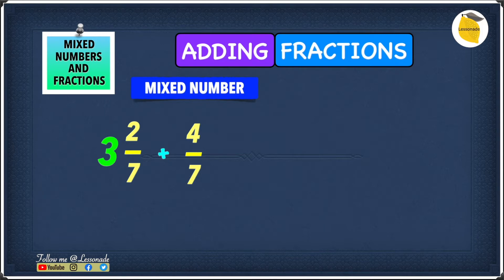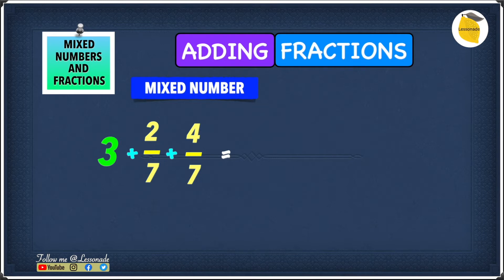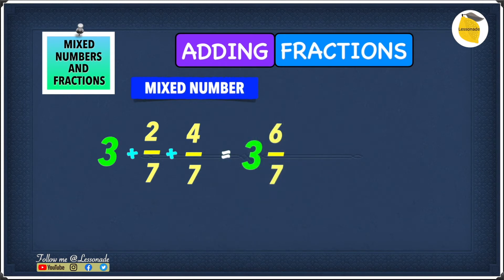We can write 3 2 over 7 as 3 plus 2 over 7, and as you can see the question looks much simpler. So 2 over 7 plus 4 over 7 will give you 6 over 7, and 3 plus 6 over 7 will give you 3 6 over 7. So our answer to this question is 3 6 over 7.